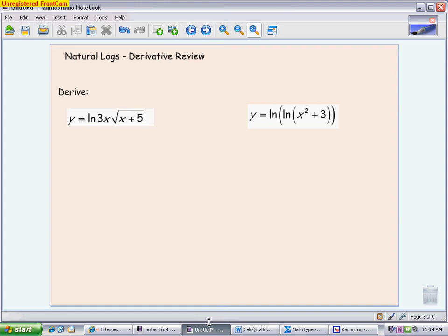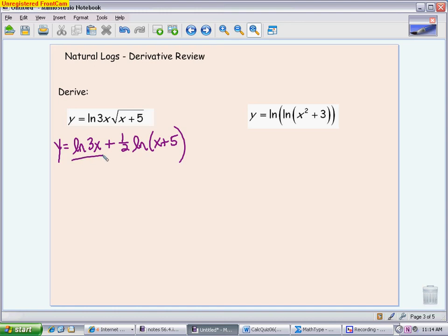I'm starting with one where you have to use properties. I'm going to break this up as the natural log of 3x plus 1/2 the natural log of x+5. If you want, you could go even further and break up the natural log of 3x into the natural log of 3 plus the natural log of x. A lot of times I don't do that just because this is so easy to derive as is. But if you want to, you definitely can.